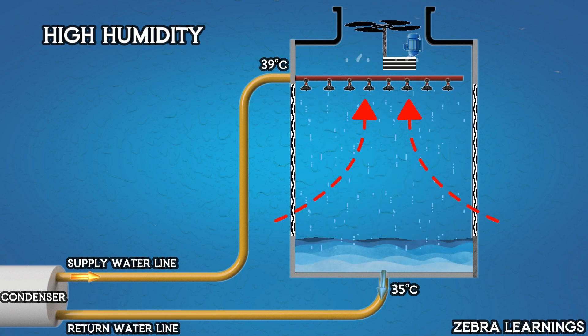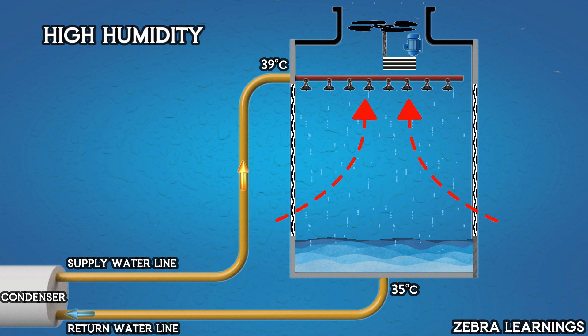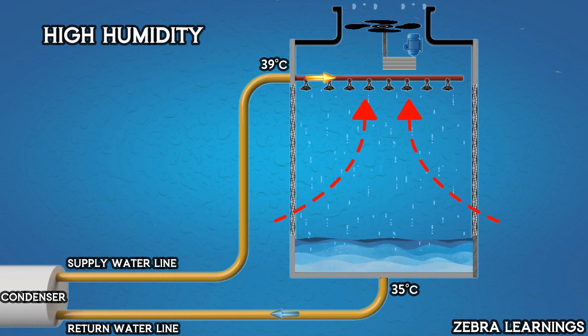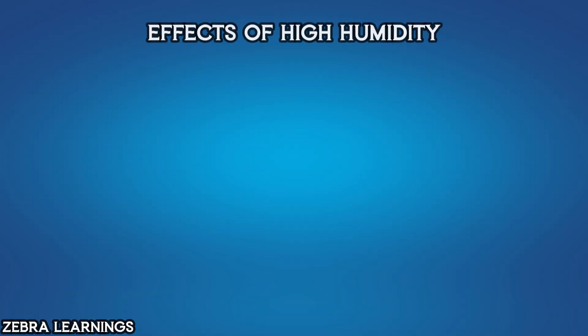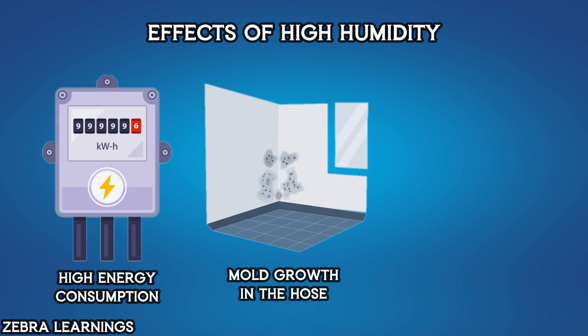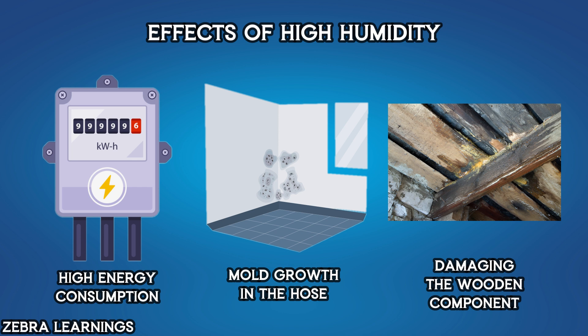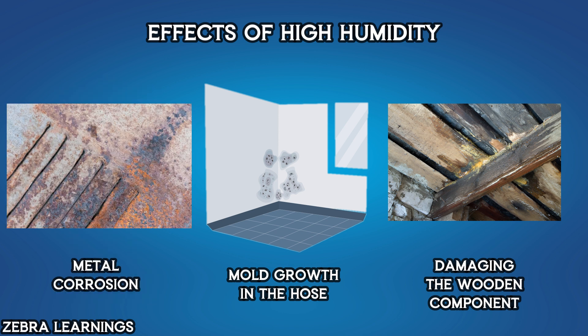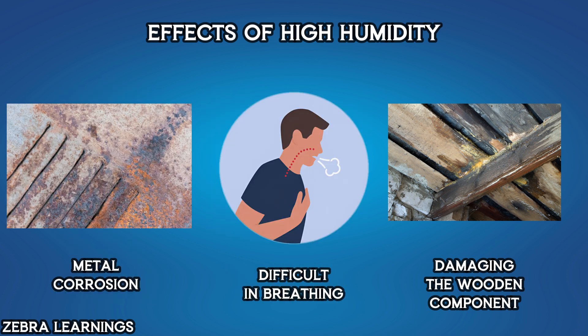These are just some of the problems caused by high humidity. Besides these issues, high humidity can cause many other problems. For example, high humidity can lead to increased energy consumption, mold growth inside homes, damage to wooden components, corrosion of metal components, and exacerbation of asthma and allergies.